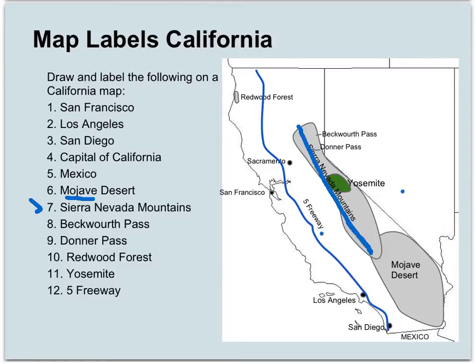The Beckwourth Pass and Donner Pass are located up in the northern part of the Sierra Nevada, just above the elbow — that's actually where Lake Tahoe is right there. These two passes are places where travelers went through when they were coming over to California through the Donner Pass and the Beckwourth Pass.